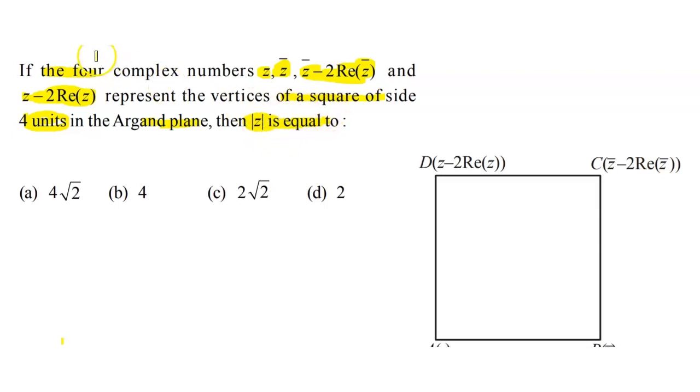In the question, we have a square which has side 4 units. Let z equal to x plus iota y, then z bar equals x minus iota y.